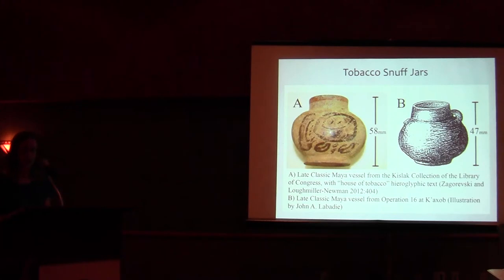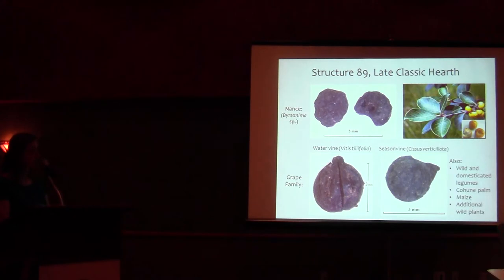So moving on to the other hearth, the hearth in Structure 89. That hearth contained a high ratio of seeds to charred wood, including a variety of seeds from plants requiring processing for various uses. Present were more than 30 nance seeds, 30 legume cotyledons both wild and domesticated, cohune palm nut fragments, seeds from two species within the grape family, and maize cupules and kernel fragments. A variety of other wild species were also found.